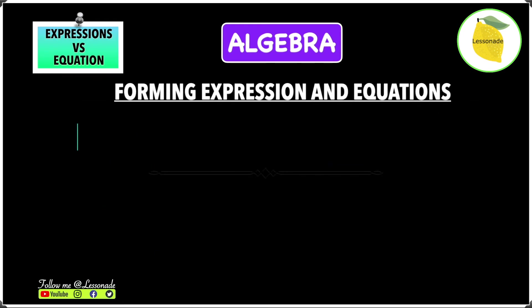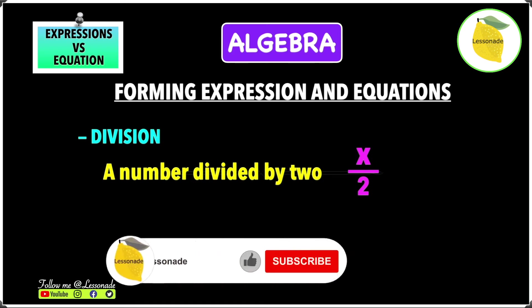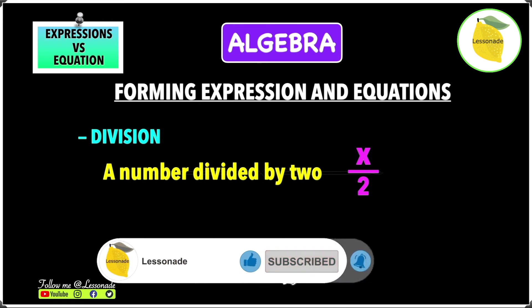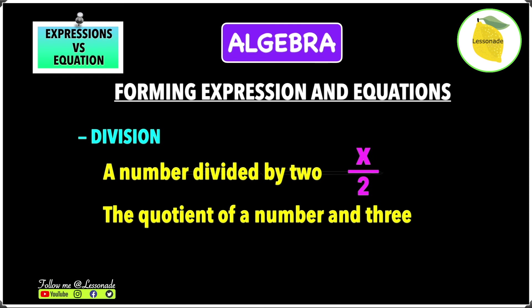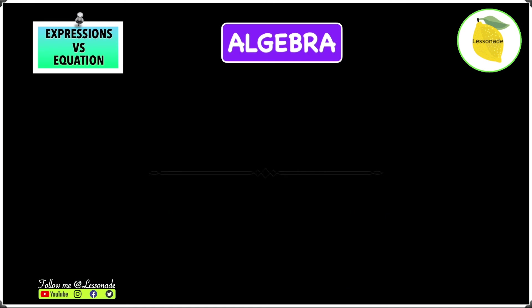Now let's look at forming expressions in division. For 'a number divided by 2,' the number is x, so you get x over 2. Remember, in algebra division is usually written in fraction form, such as x over 2. 'The quotient of a number and 3' means dividing x by 3, giving x over 3. '1 eighth of a number' gives x divided by 8.